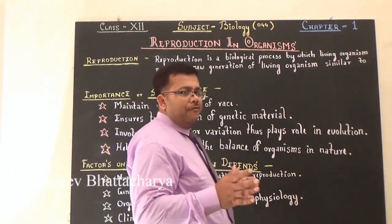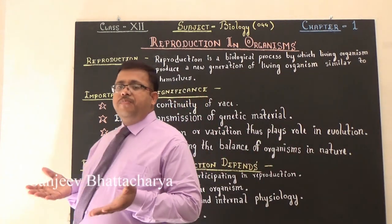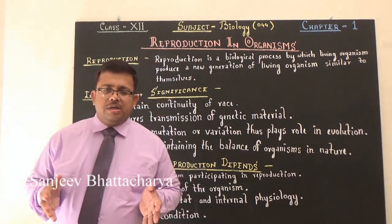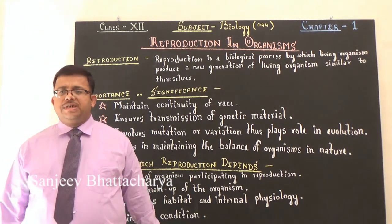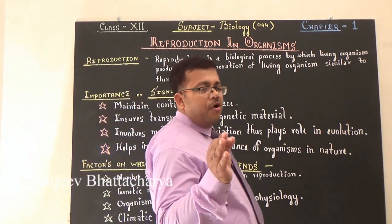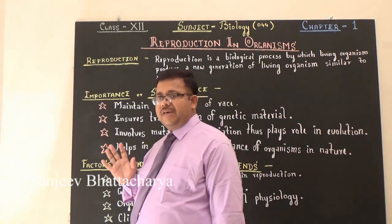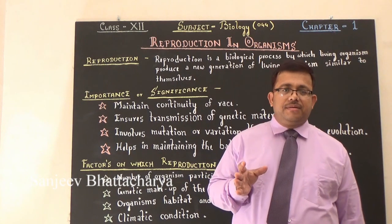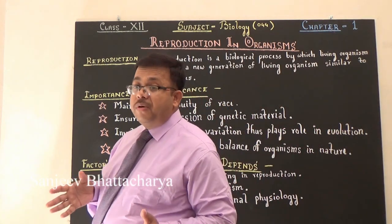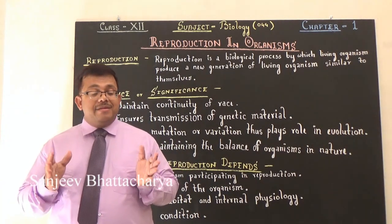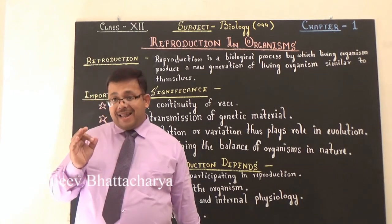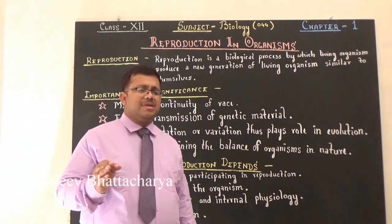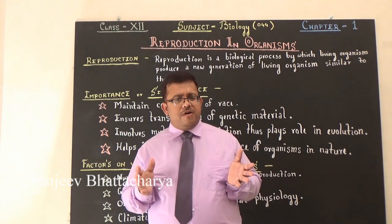The question arises: why does an organism reproduce? What is the significance or importance of Reproduction? First, Reproduction ensures continuity of species or race. Second, Reproduction ensures transmission of genetic material from parents to offspring. Third, Reproduction involves mutation or variation, thus plays an important role in evolution. And lastly, Reproduction helps in maintaining the balance of the number of different organisms in nature.